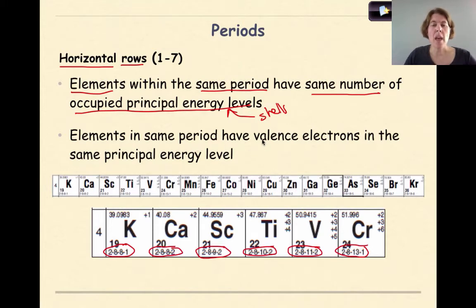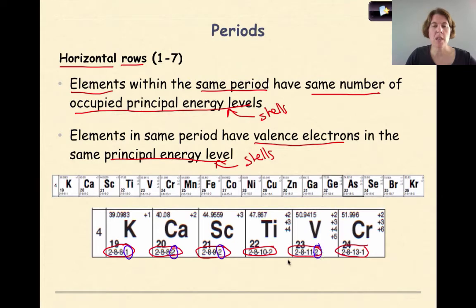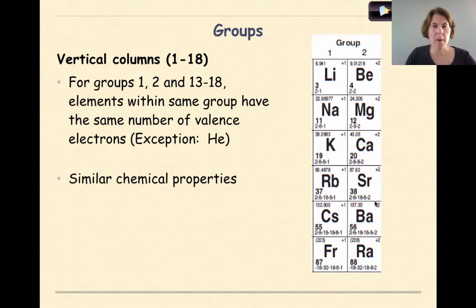Elements in the same period also have valence electrons in the same principal energy level. When we look at electron configurations and ask where are the valence electrons, they will always be in the fourth shell for period four elements. Potassium has one valence electron in the fourth shell, calcium has two, scandium has two, and vanadium has two valence electrons in the outermost shell. Whether it's titanium or chromium, their valence electrons all occupy the same principal energy level.